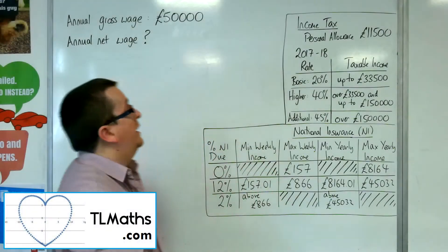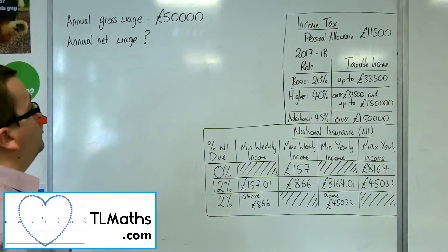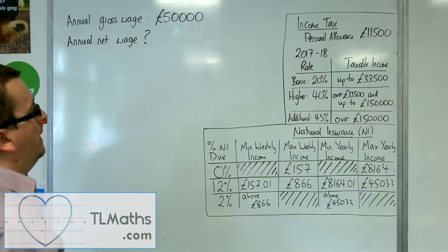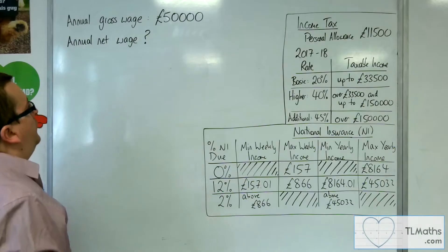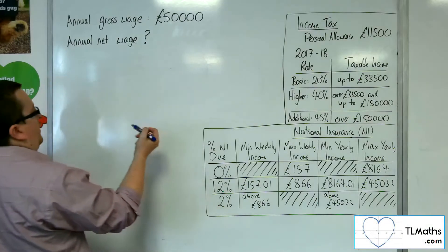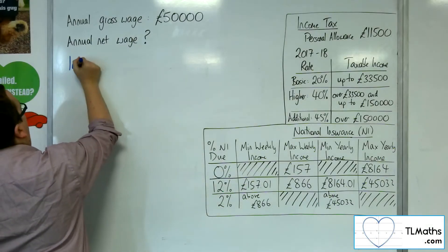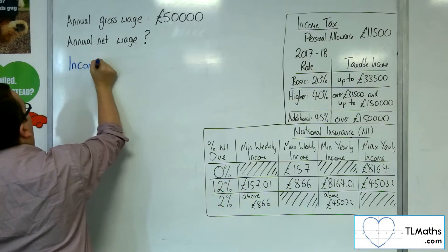So this time we're looking at £50,000 as the annual gross wage. We're going to look at the income tax first.